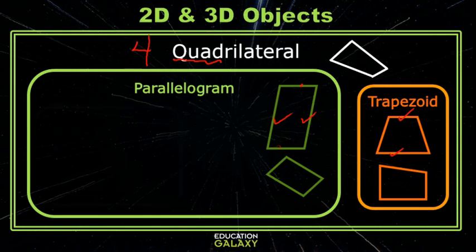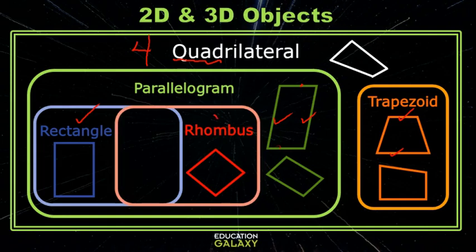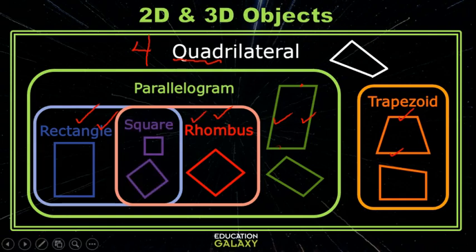Parallelograms with four right angles are called rectangles and parallelograms with four congruent sides are called rhombuses. If a parallelogram has four right angles and four equal sides it is called a square.